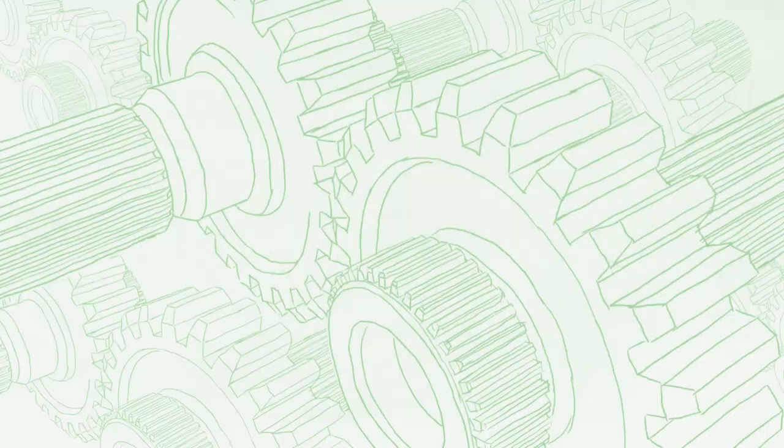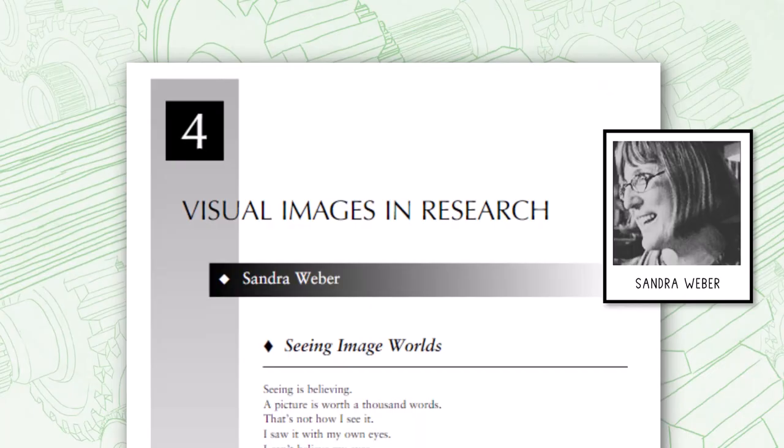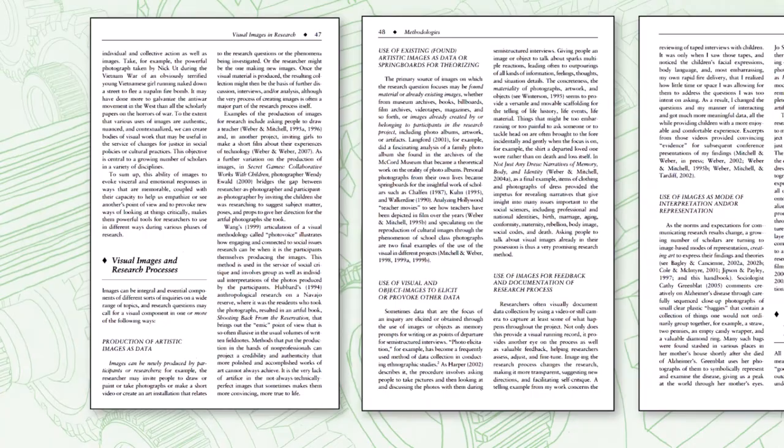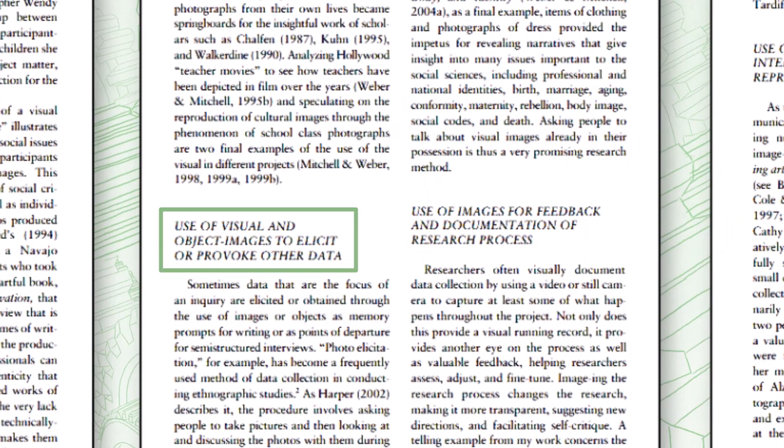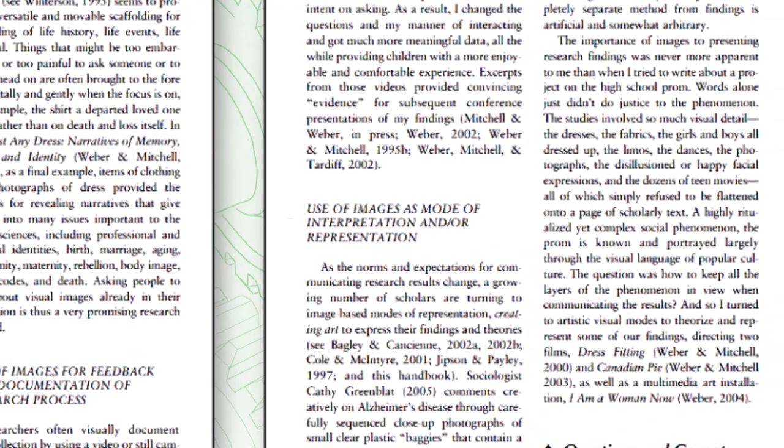Sandra Webber offers an alternative perspective from the arts and delineates five ways images can be used during research. Artistic images can be produced as data. Pre-existing or found artistic images can serve as springboards for theorizing. Images can elicit or provoke other data. Images can document the research process. And in the final stages of research, images can help with interpretation or representation.